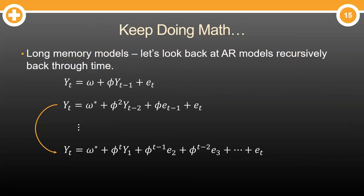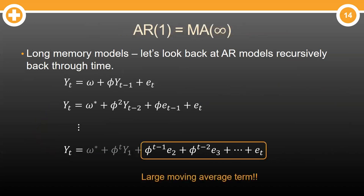Of course, we can continue back across time until the first observation, Y1, which still has a small effect on Y today. But I don't want you to focus there. Let's look at the right-hand side of the equation. We have a large moving average term. Look at these errors. Error T, error T-1, and so on, all the way back to the beginning.